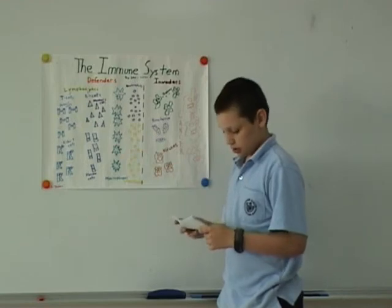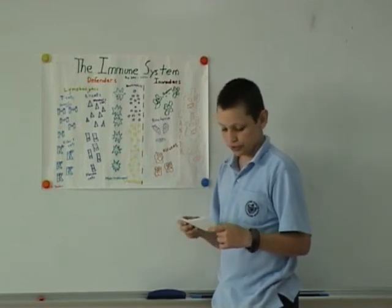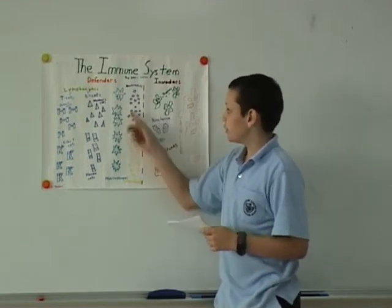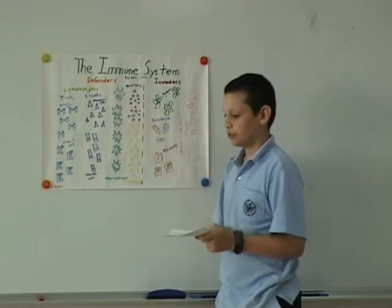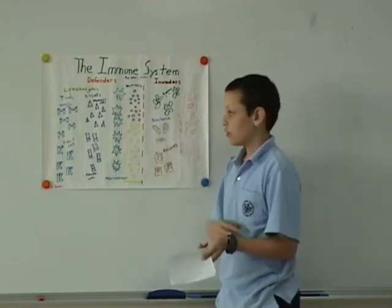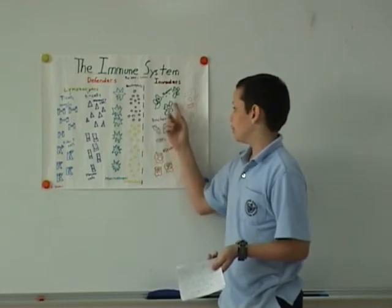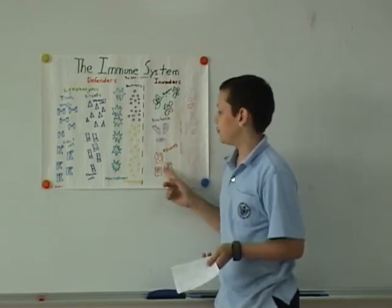Types of functions of white blood cells: Neutrophils travel around your body through your blood, looking for bacteria, germs, and viruses.